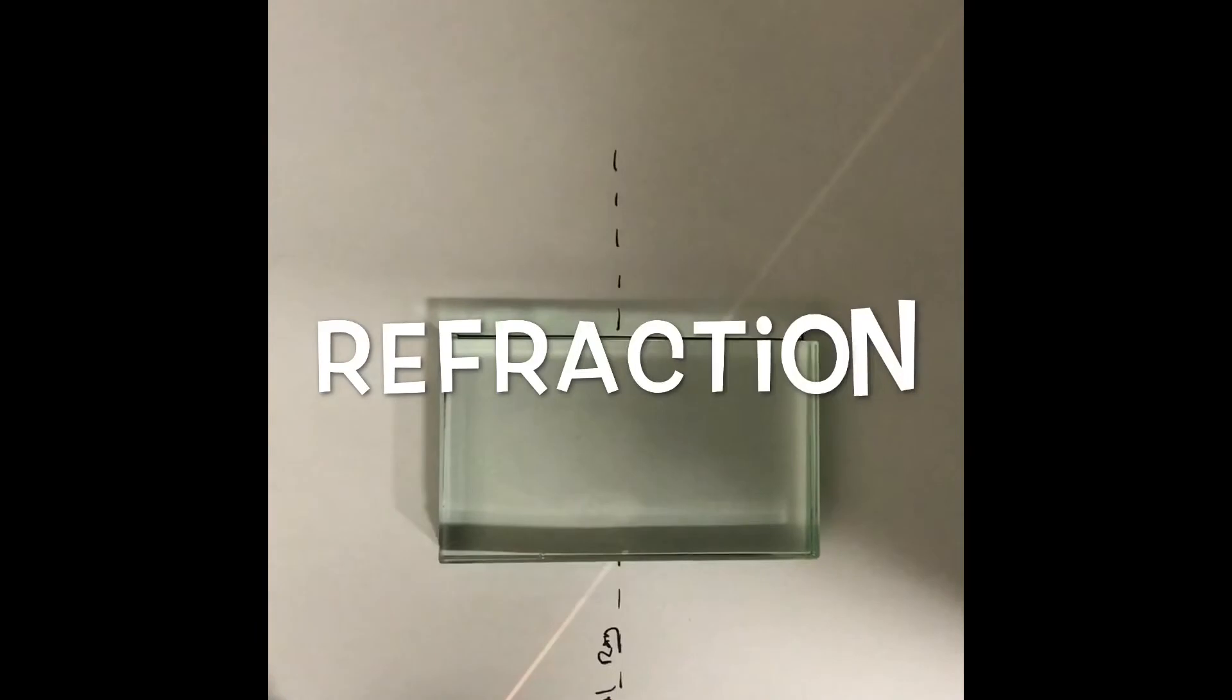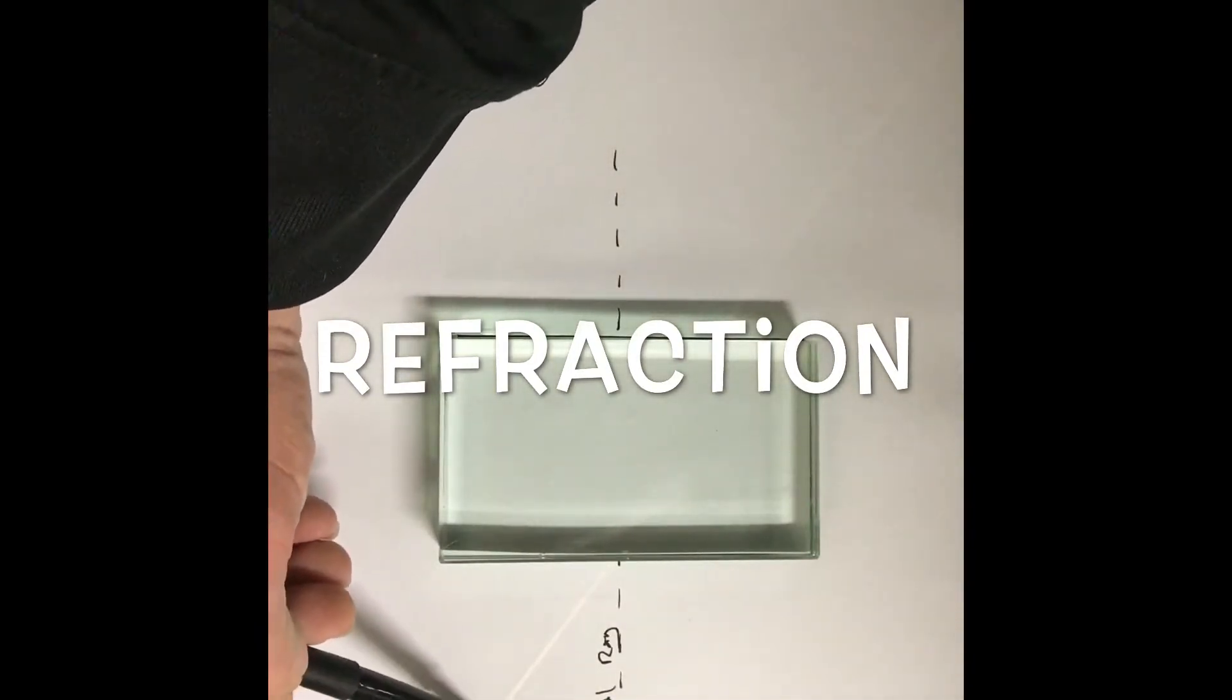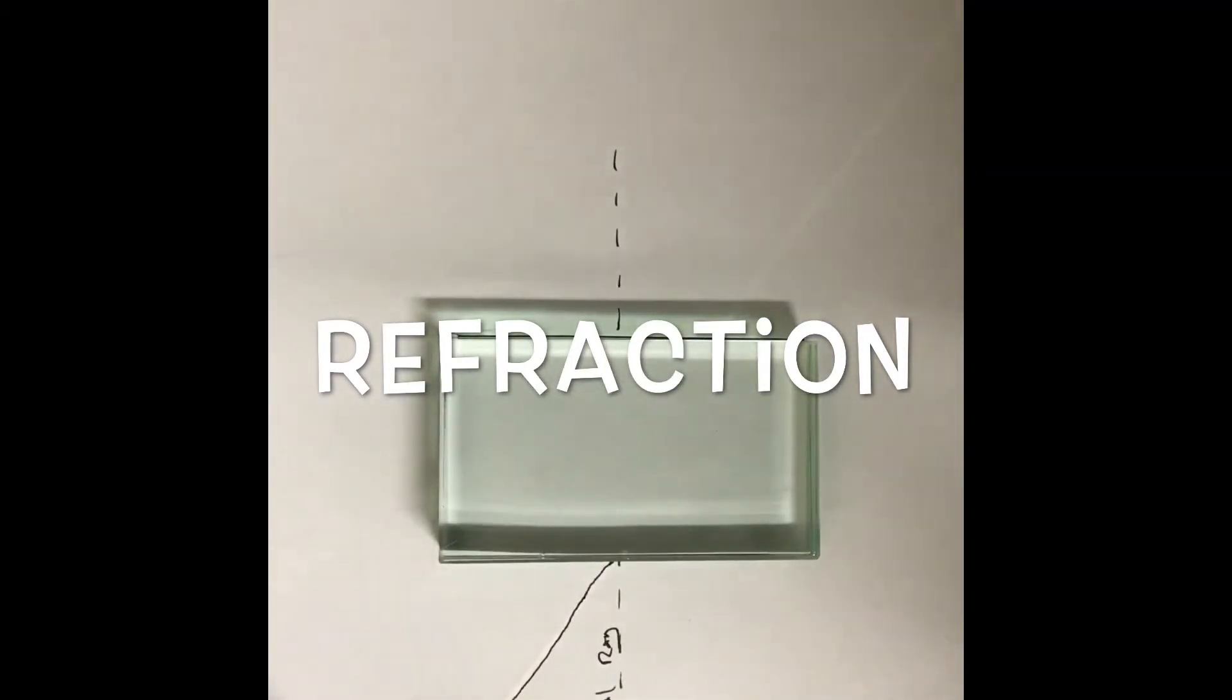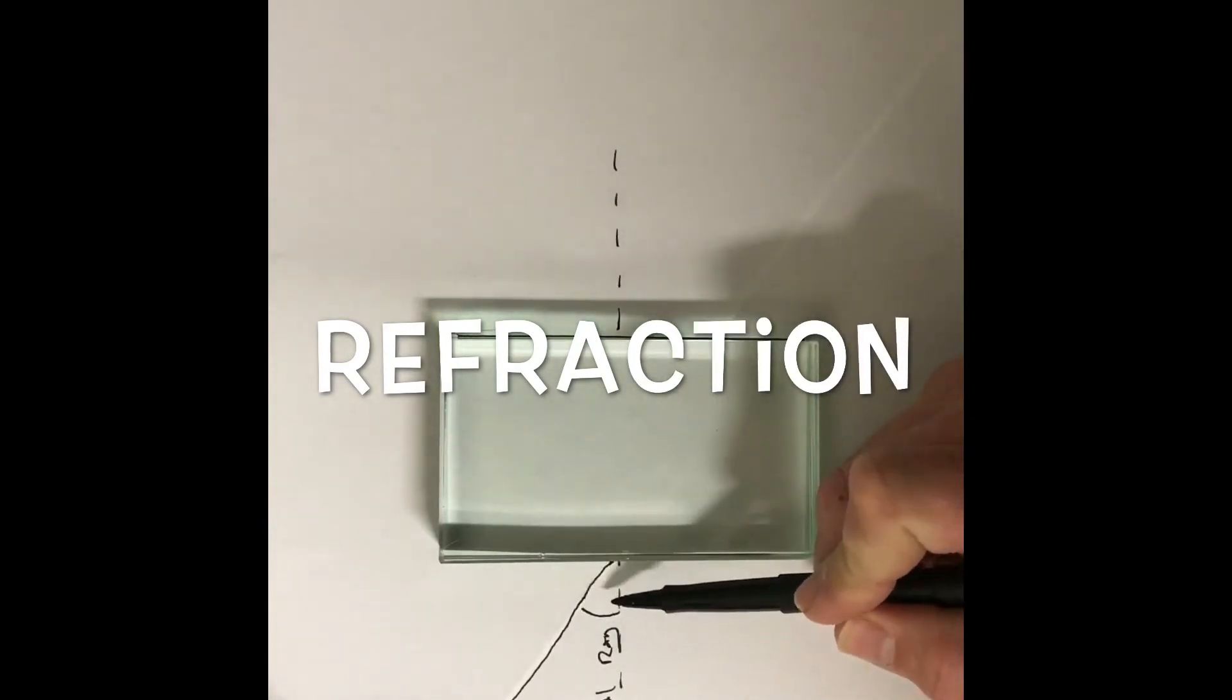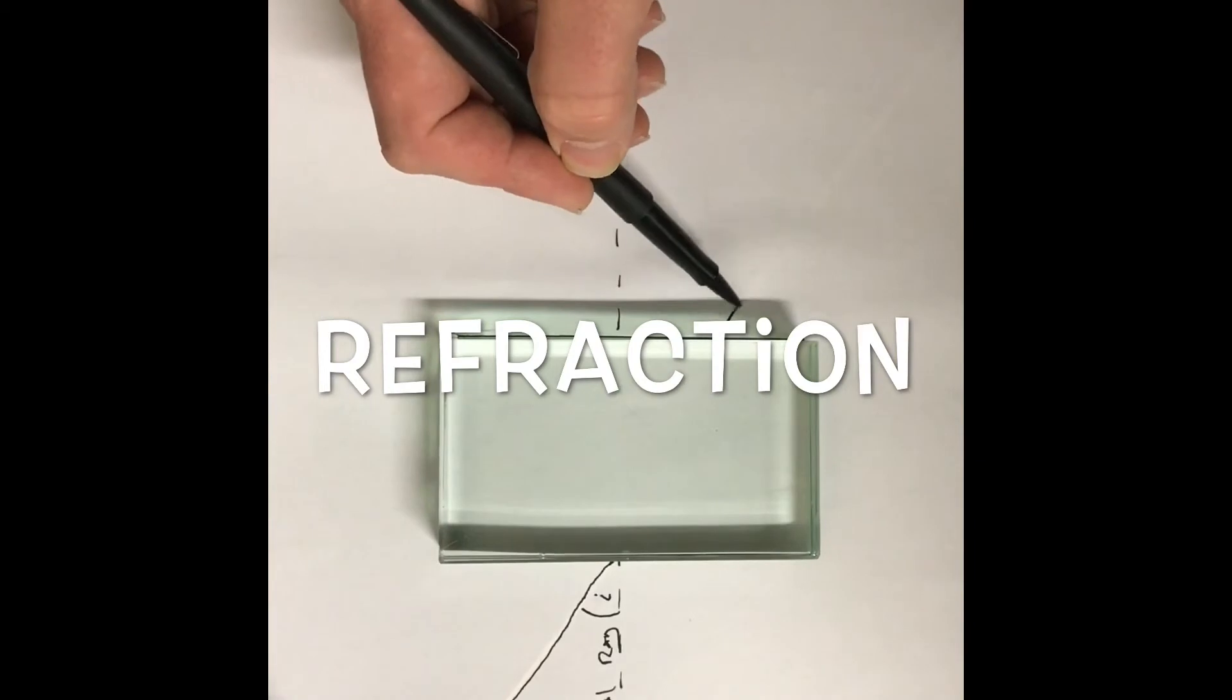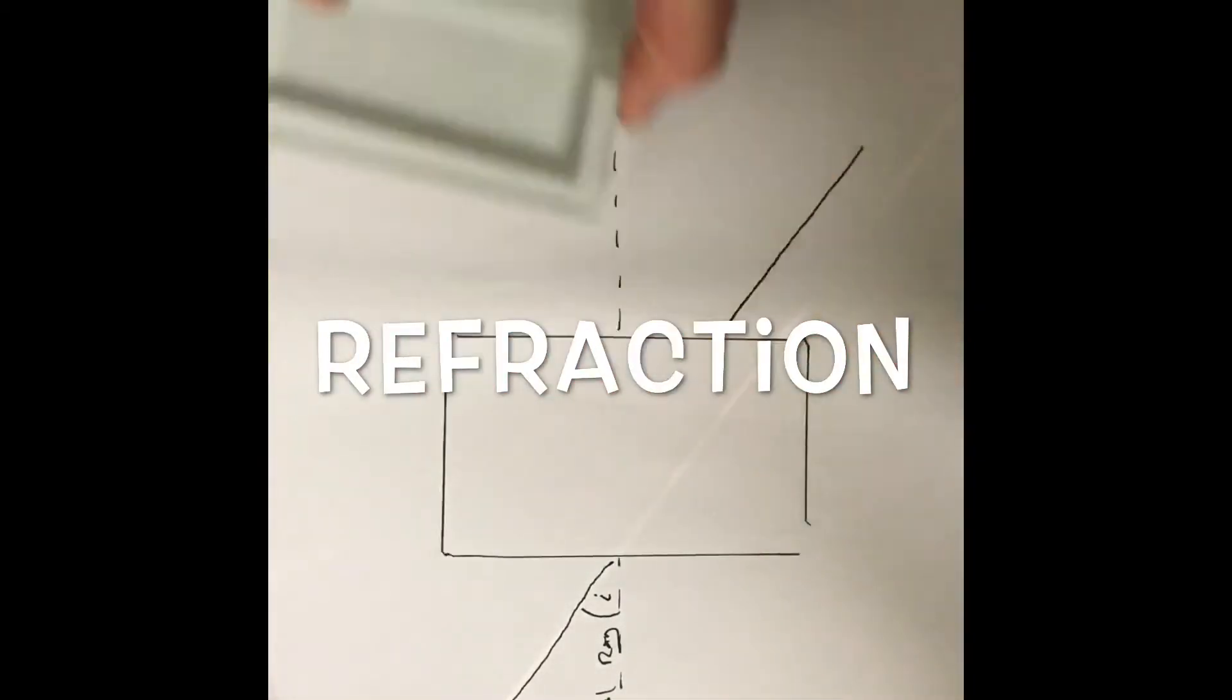So now what I've done is I've angled the light at a different position. As the light comes in here, we call that an incident ray or an angle of incidence. As we see here, I'll call that I. And as it comes out of the block, you'll also notice that there is an angle on that. If I remove the block...